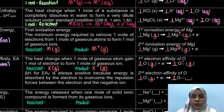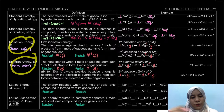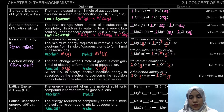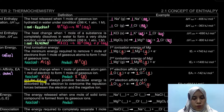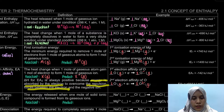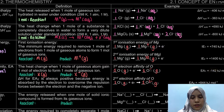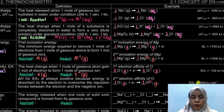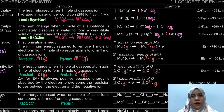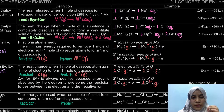For the second electron affinity of oxygen: O⁻(g) + e⁻ → O²⁻(g). The ΔH for the second electron affinity is always positive because energy is absorbed to overcome repulsion between the incoming electron and the negatively charged ion. The first EA is negative — heat is released — but the second EA is positive because of this repulsion.